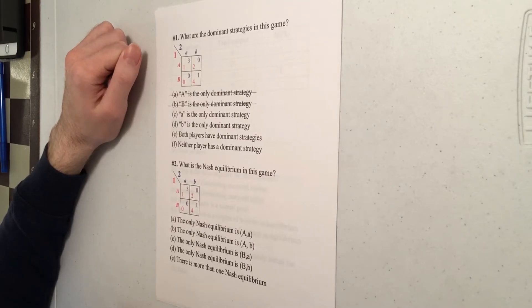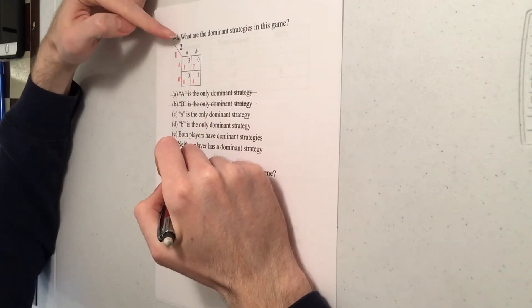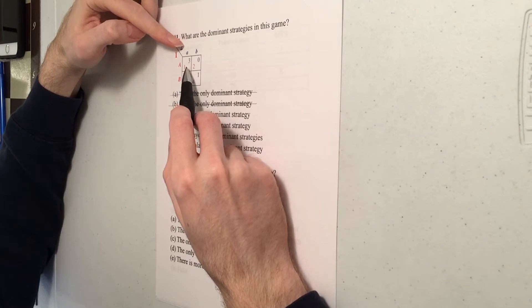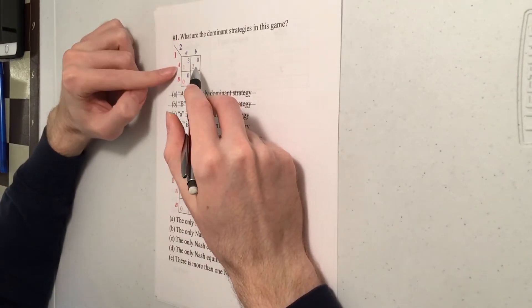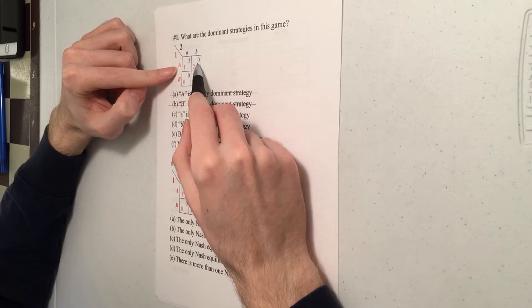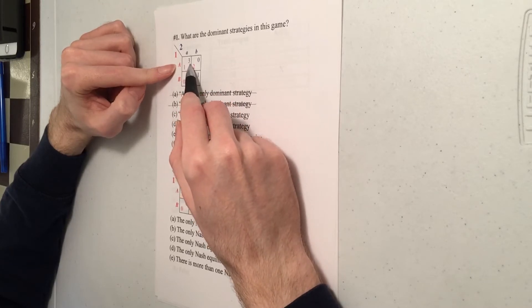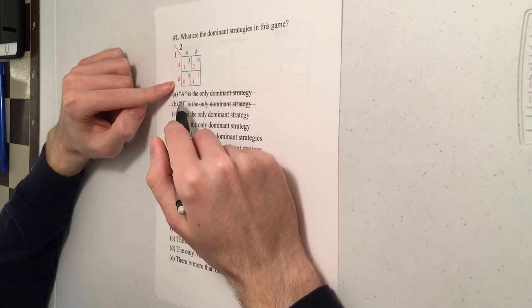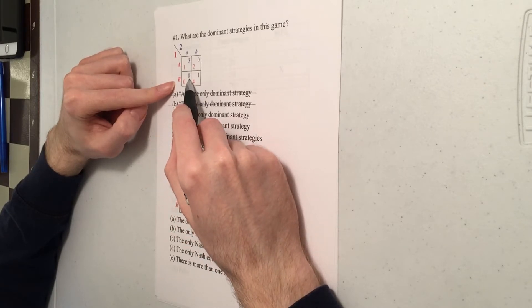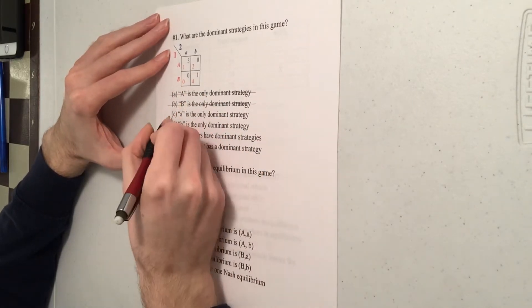Now perhaps player two has a dominant strategy. So is little a a dominant strategy for player two? If player one is playing A, you can get three by playing little a. That's better than getting zero from playing little b. If they play big B, you can get zero by playing little a. However, you can get one by playing little b. So little a is not always the best response. So little a is not dominant either.